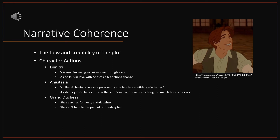Next, I'm going to be looking at narrative coherence. This looks at the flow and credibility of the plot overall — the structure of the story itself and how much credibility the audience can find as the story progresses, looking at the actions of the characters in relation to the overall plot. The first person I'd like to talk about is Dimitri. We see him at the beginning trying to get money through a scam, which we as the audience can understand — it's something he thinks he needs to do to get by. But we can see his actions change in response to the plot.